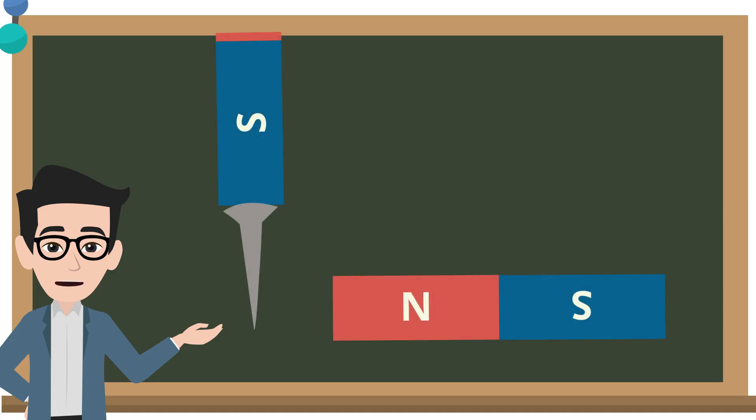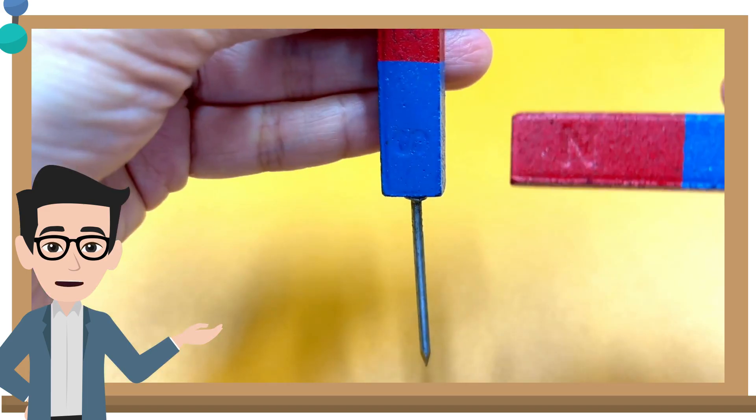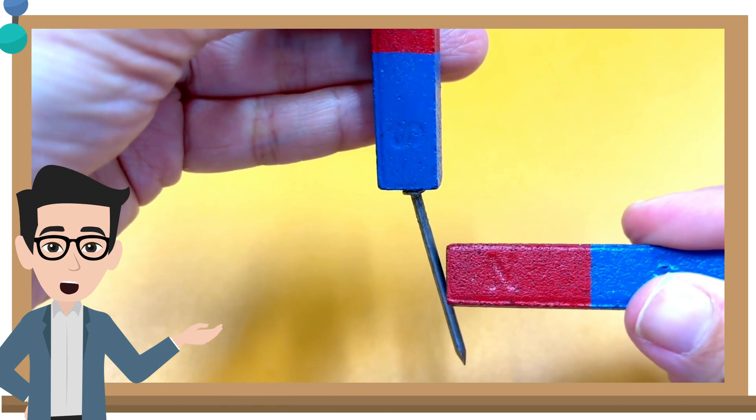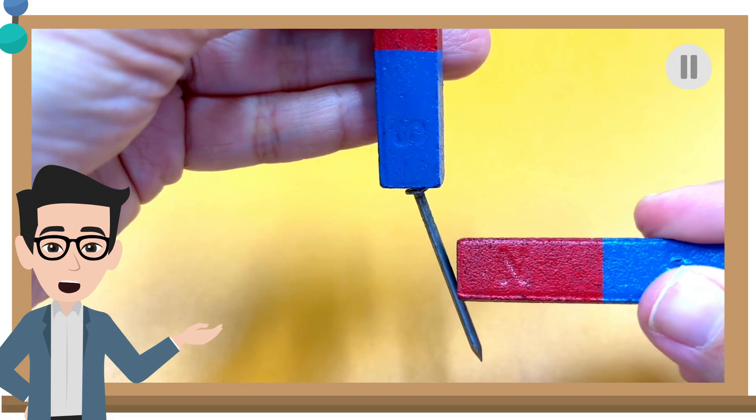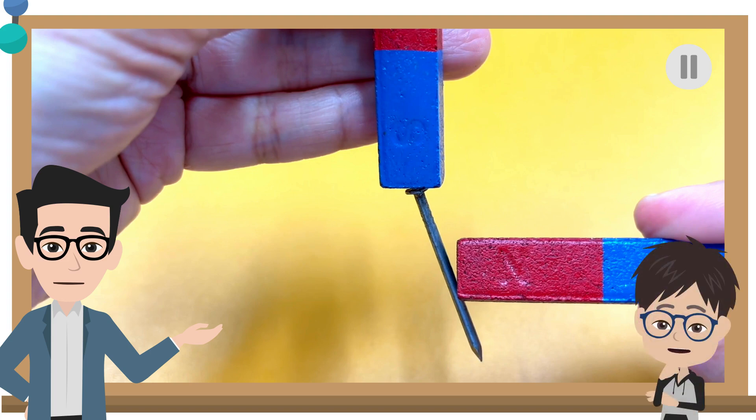That's right. Then, bring another bar magnet near the other end of the iron nail. Observe what happens to the end of the iron nail. Pause and discuss. The end of the iron nail is attracted to the north pole of the bar magnet.